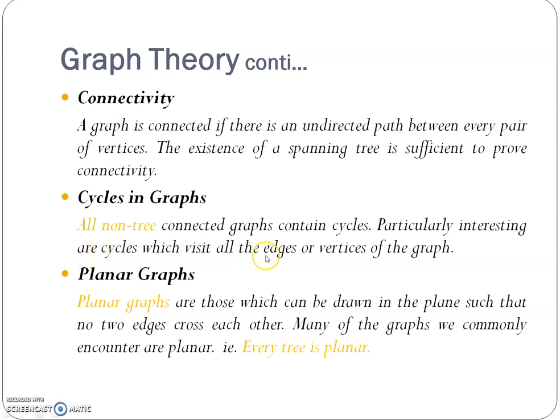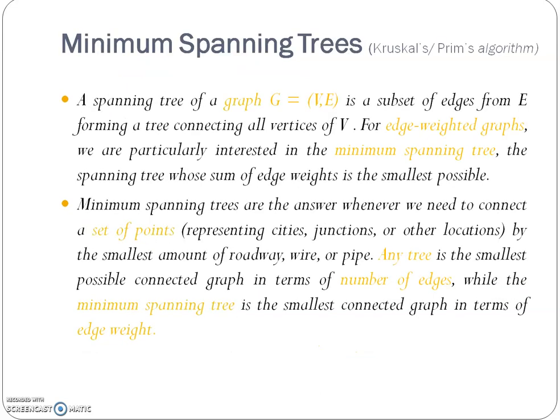Intersecting cycles visit all edges or vertices of the graph. Next is planar graph. Planar graphs are those which can be drawn in the plane such that no two edges cross each other. Trees are the best example to represent a planar graph where no two edges are crossing each other.